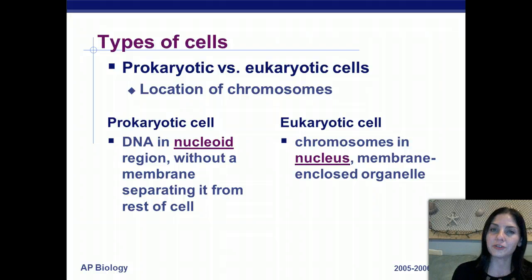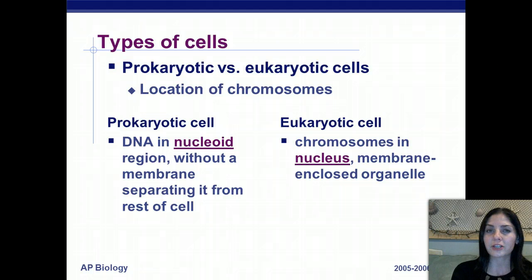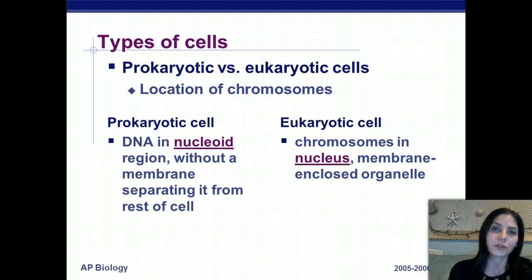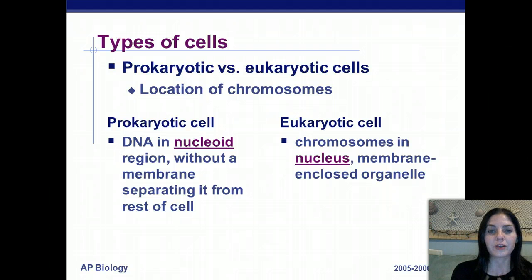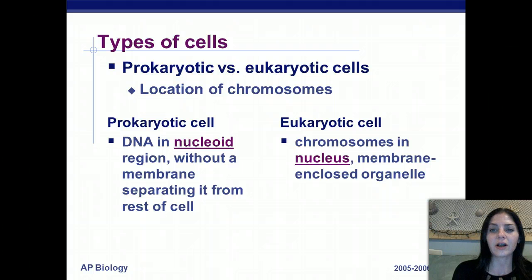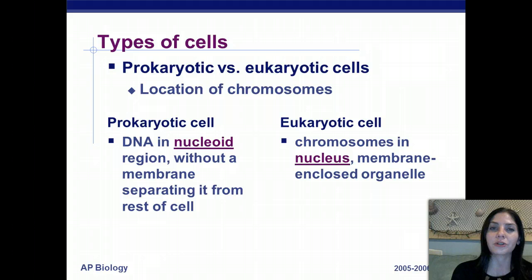There are two different types of cells: prokaryotic and eukaryotic. They have different locations for their chromosomes. Prokaryotic cells lack a true nucleus or nuclear-bound membrane, so they have DNA in a region called the nucleoid region. Eukaryotic cells have chromosomes in the nucleus, which is contained within the nuclear membrane or nuclear envelope.